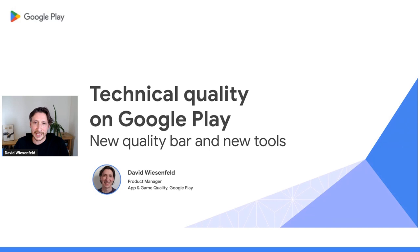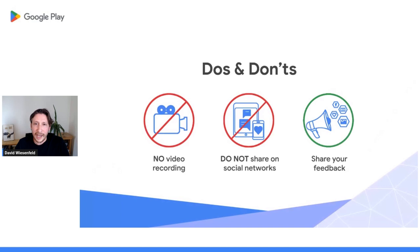I'm excited to be talking to you about how Play thinks about quality and how our tools can help you improve the quality of your app or game in order to make a great ecosystem where users have access to wonderful, high-quality apps and games. Before we get started, let's review some do's and don'ts for the webinar. We kindly ask you to refrain from recording the session or sharing any of the content on social media. We'll be providing you with a list of links for the resources mentioned in the presentation. Towards the end of the session, I will share a link to our anonymous feedback form. This is an incredibly important tool for us at Google Play to receive your input and consider it for our upcoming webinars. So please do make sure to spend about a minute to fill out the form and help us improve.